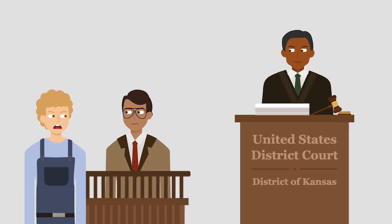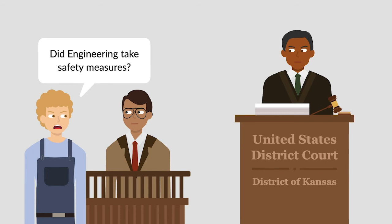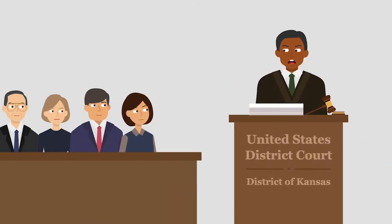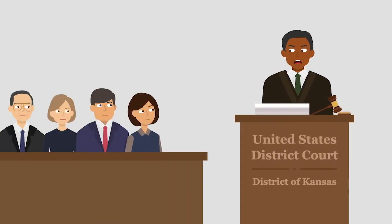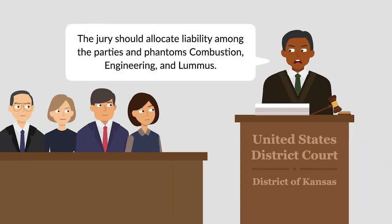At trial, Hardin put Fell on the stand and questioned him about Engineering's fault. At the end of the trial, the District Court instructed the jury to allocate liability among the parties, as well as phantoms Combustion, Engineering, and Loomis. Hardin objected to considering the fault of any party not named in the pretrial order.